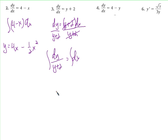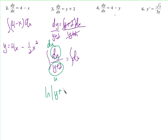Take the antiderivative of both sides. If we let u equal y plus 2, the derivative of u is dy — that's du. So we have du over u, which is the natural log of the absolute value of u, which is y plus 2. That equals x (the antiderivative of dx is just 1·dx). To get y by itself we rewrite in exponential form: e to the x equals y plus 2, so e to the x minus 2 equals y.